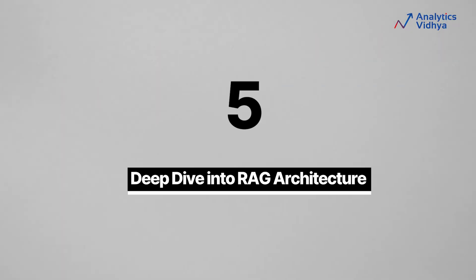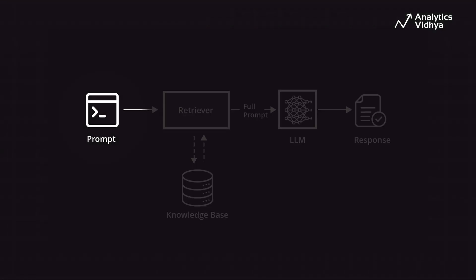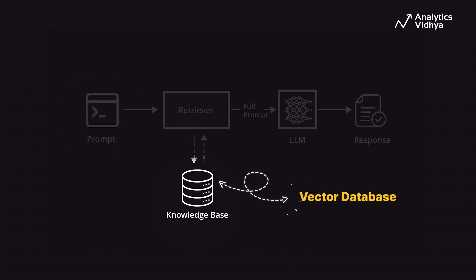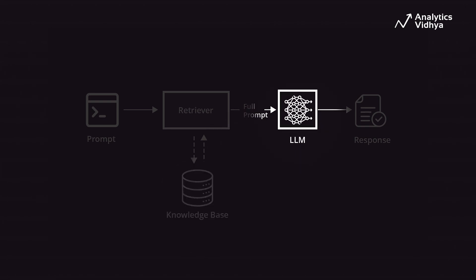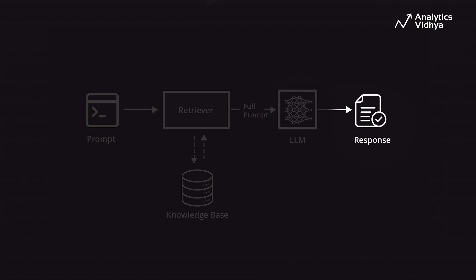Step 5: Deep dive into RAG architecture. Familiarize yourself with the workflow of how RAG systems work. As shown in the diagram, based on the user prompt or query, a retriever fetches relevant data from a knowledge base, like a vector database, relevant to the query. Then an instruction prompt instructs an LLM to answer the user query using this retrieved context information and generate a contextual response.